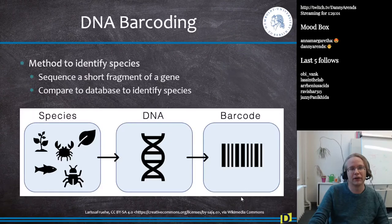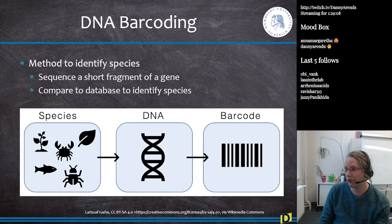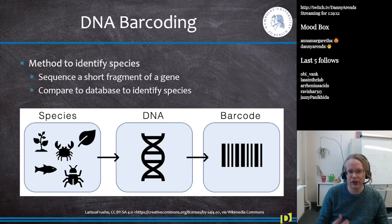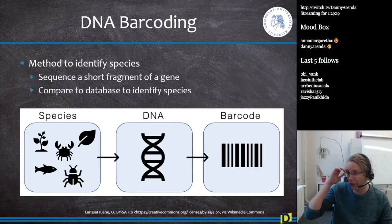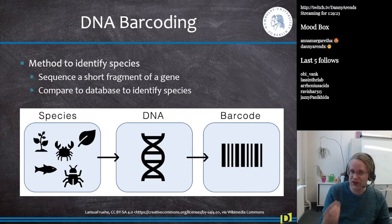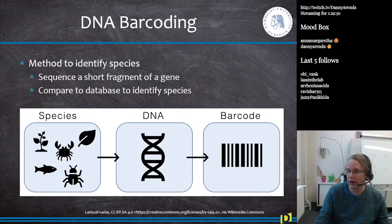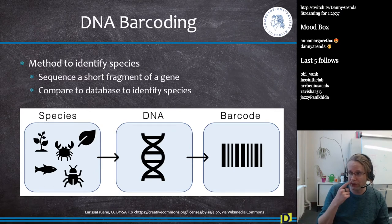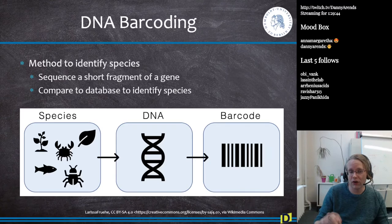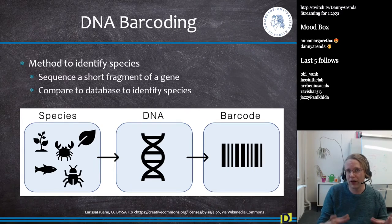DNA meta-barcoding is a novel technique to identify different species. The idea is that you sequence a short fragment of a gene and then compare this short fragment to a database to identify which species were in your sample. It doesn't deal with a single species — you take, for example, a cup of water from somewhere and then sequence all the DNA in there. In the end you get sequences from different species, and based on the amount of reads from the different species, you can figure out which animals were in your sample.